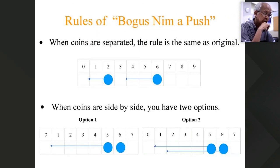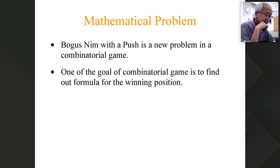The rule of Bogus Nim with a push: When coins are separated, the rule is the same as the original. But when coins are side by side, you have two options. Option one and option two. So in option two, two coins move towards left together.